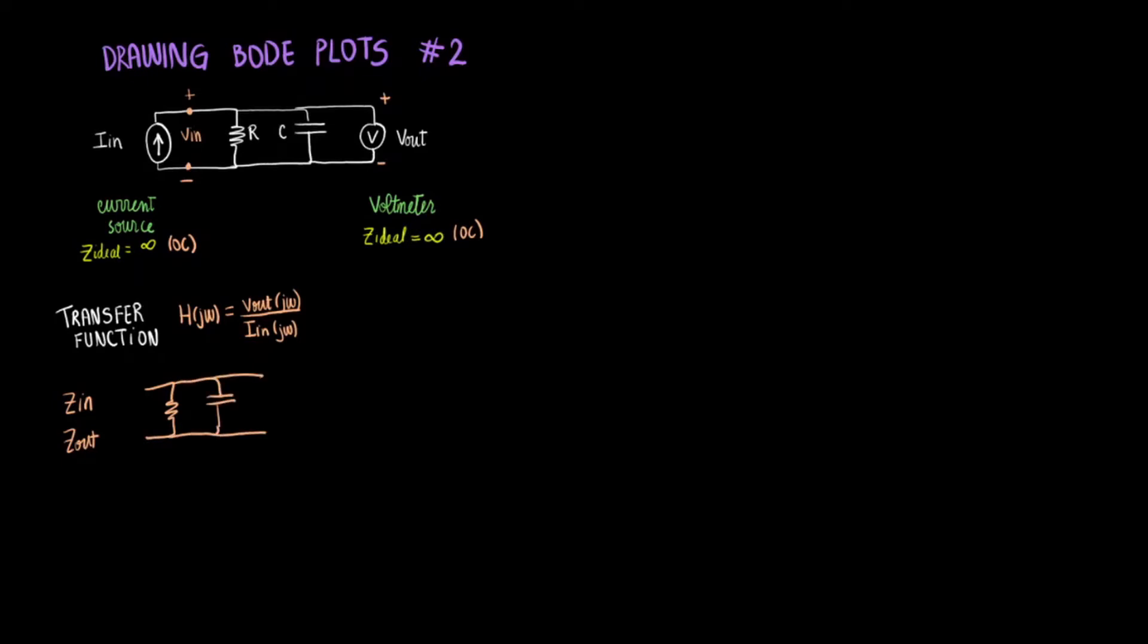So the second we decide to solve for the expression, we will get R times 1 over j omega C over R plus 1 over j omega C.